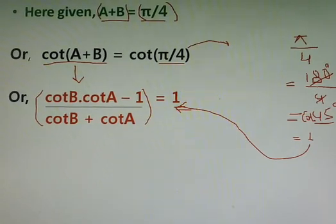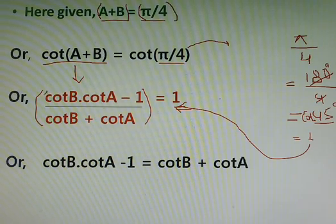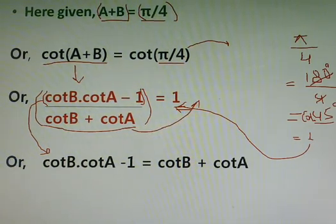So this is how this one comes. After this step, we will move to the next step, and that is we will keep the numerator cot B into cot A minus 1 as it is here, and this whole part cot B plus cot A will go to the other side with 1 and that gets multiplied. When this part gets multiplied with 1, that would be equals to the same, that is cot B plus cot A.